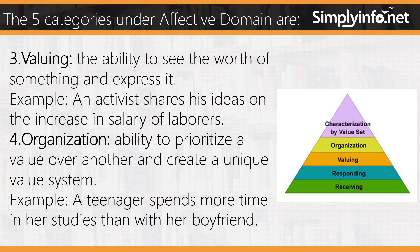Number three: valuing — the ability to see the worth of something and express it. Example: an activist shares his ideas on the increase in salary of laborers. Number four: organization — the ability to prioritize one value over another and create a unique value system. Example: a teenager spends more time on her studies than with her friends.